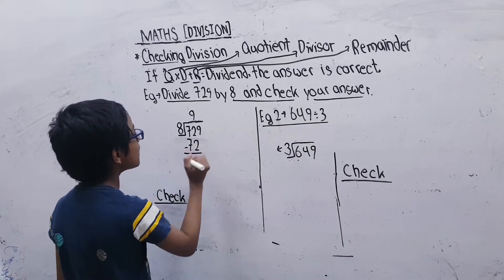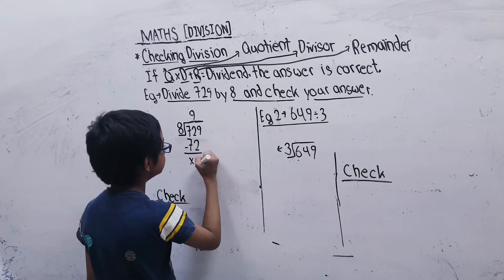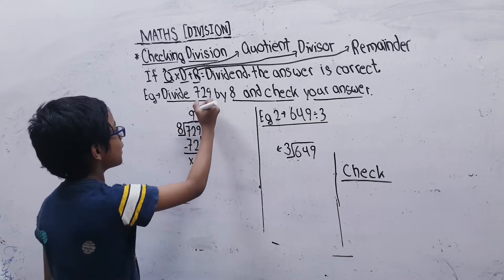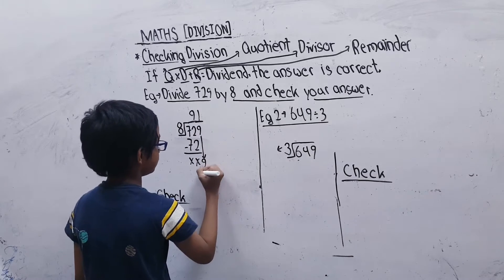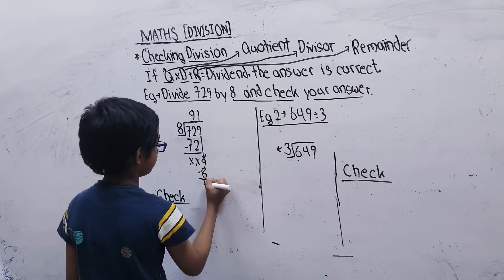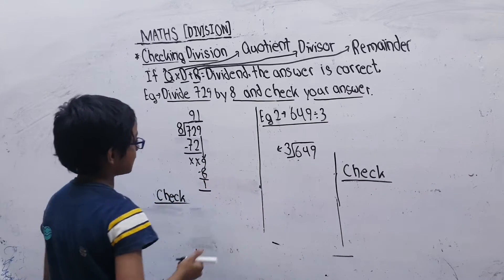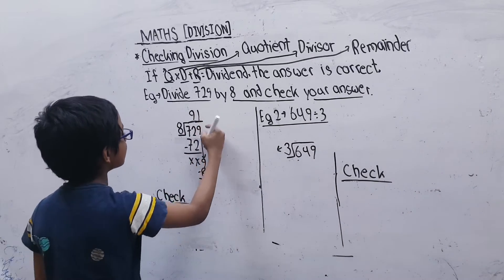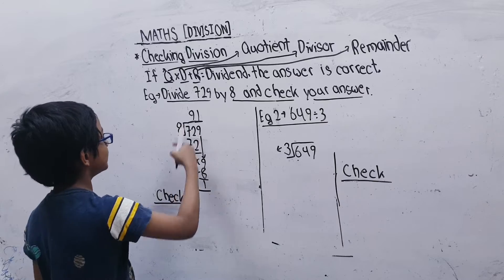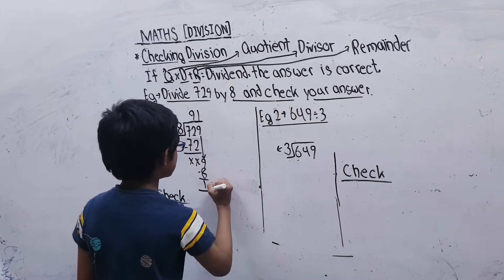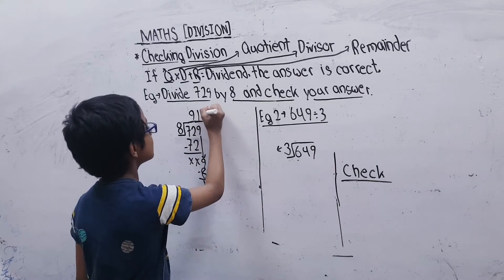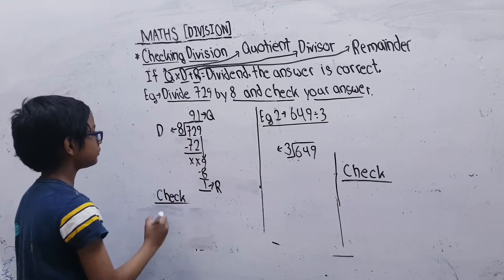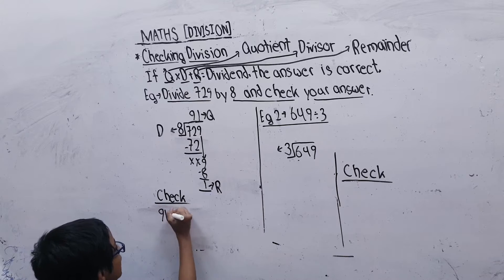So 72 minus 72 is 0, and then 9 will come here, and 8×1=8. So the remainder is 1. We have to multiply 8 by 91. This is the remainder, this is the quotient, and this is the divisor.